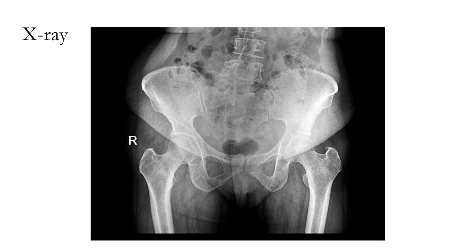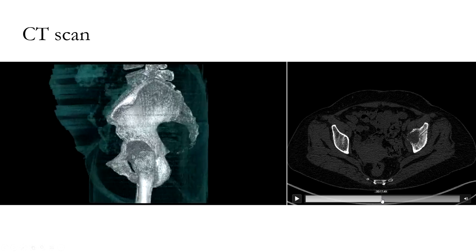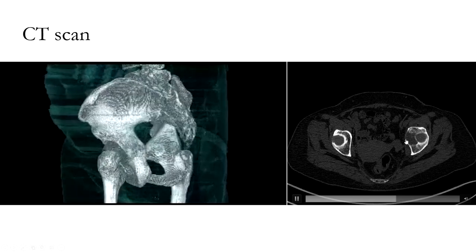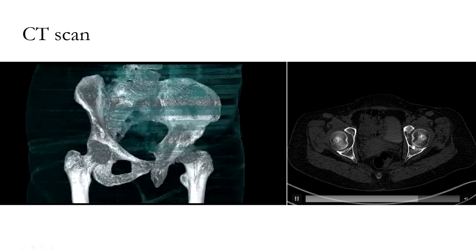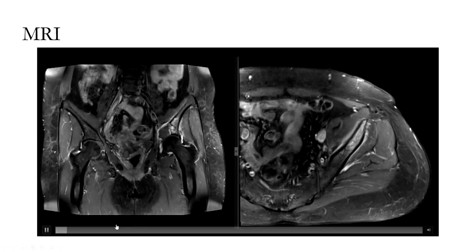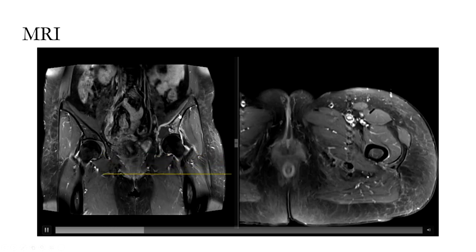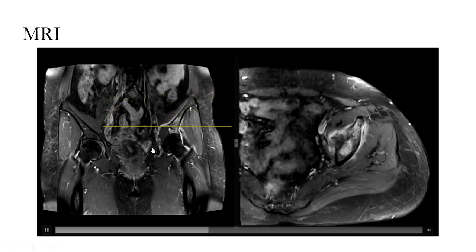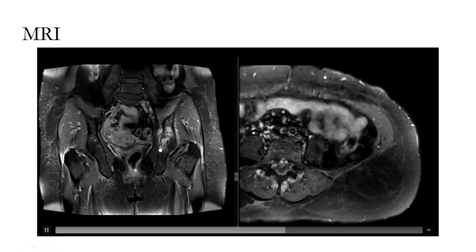There were no obvious changes seen on the plain radiograph of the pelvis. However, the CT scan showed signs of osteolysis in the medial and superior aspect of the acetabulum, with no articular breach or extension into the joint. The MRI scan also confirmed an osteolytic lesion extending superiorly into the iliac plate and inferiorly into the superior pubic ramus and the superior aspect of the ischium, with no intra-pelvic extension or joint contamination.